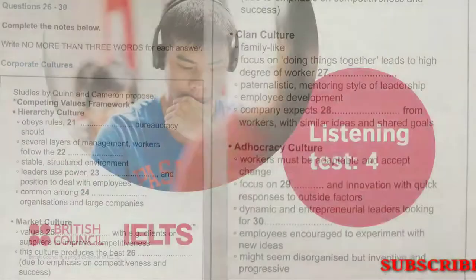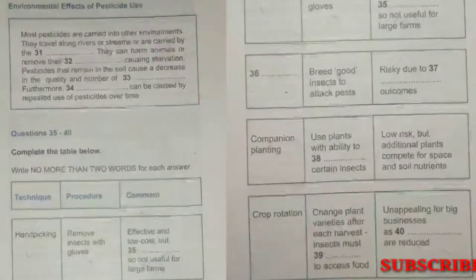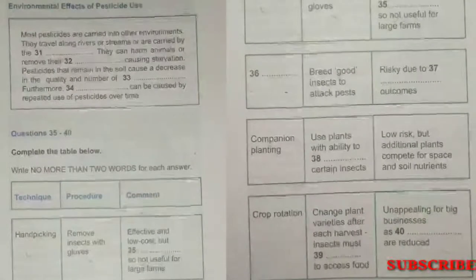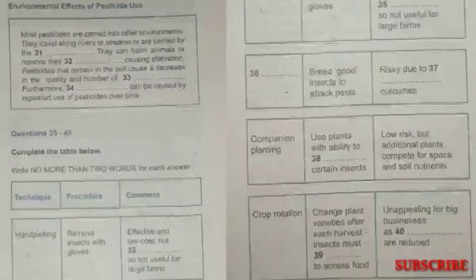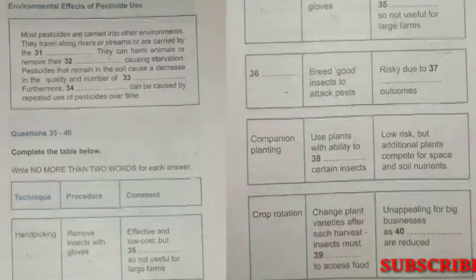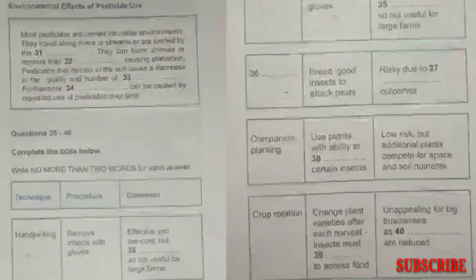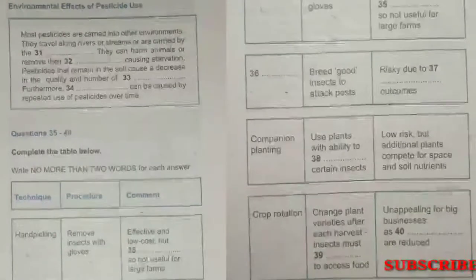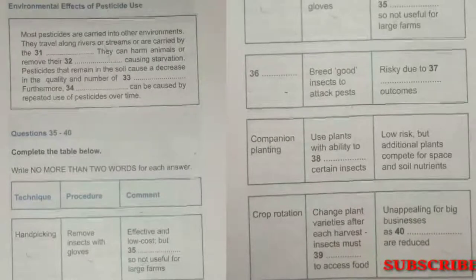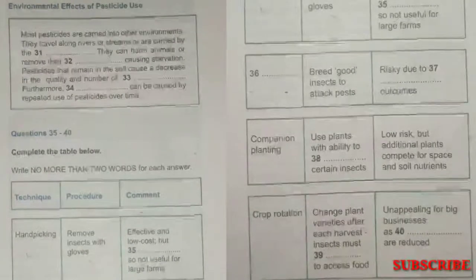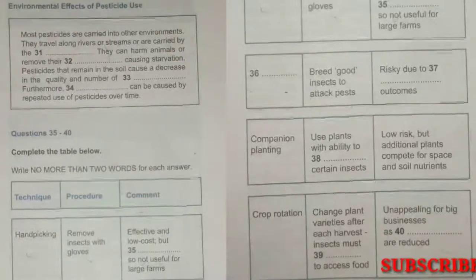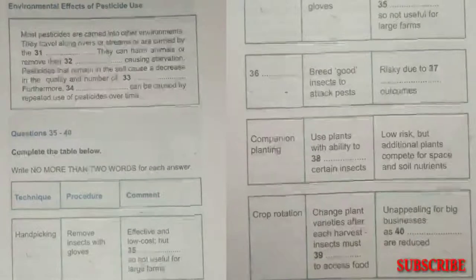Now turn to Section 4. Section 4. You will hear a lecture on the environmental effects of pesticides and some alternatives to their use. First, you have some time to look at questions 31 to 40. Now listen carefully and answer questions 31 to 40.